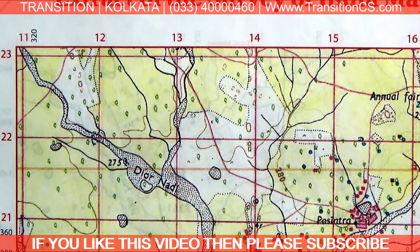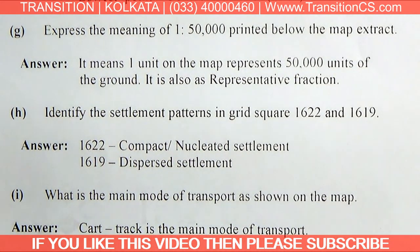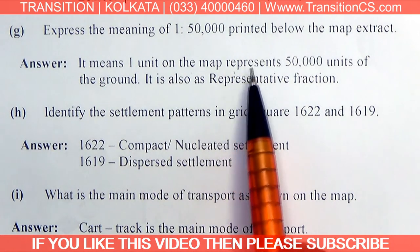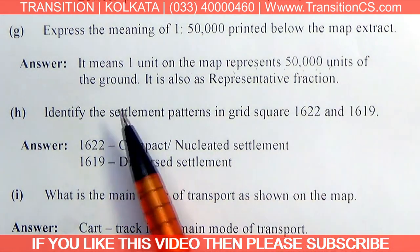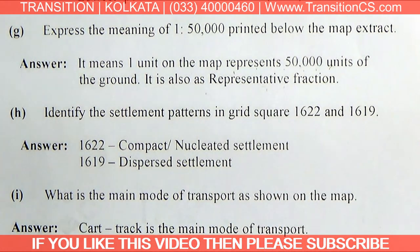There may also be a theory question asking you to explain the scale of 1:50,000 printed below the map. This means one unit on the map represents 50,000 units on the ground. This is also known as the Representative Fraction, or RF. That is all you need to write for this answer.